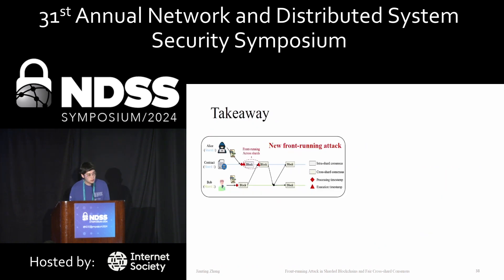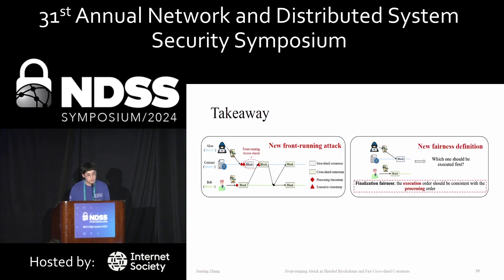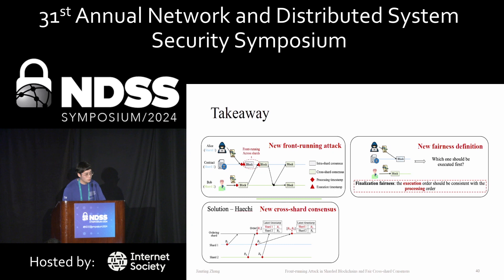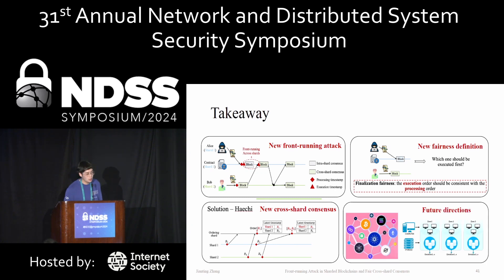The takeaways: first, we present a new front-running attack that is different from existing front-running attacks. Second, we define a new finalization fairness property that captures the behaviors of front-running attacks. Third, we present our solution HATCHI. Future directions could include exploring front-running attacks in other scenarios such as blockchain interoperability and database sharding. Thank you for listening.